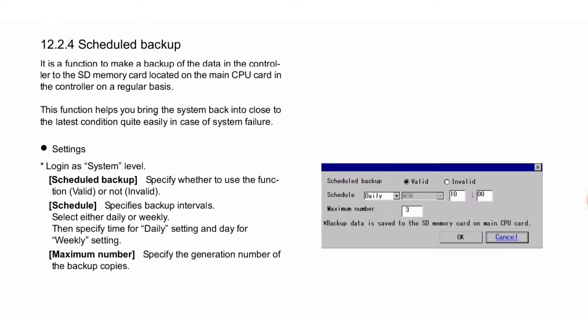Settings: log in as system level. Scheduled backup — specify whether to use the function: valid or invalid. Schedule specifies backup intervals — select either daily or weekly, then specify time for daily setting and day for weekly setting. Maximum number specifies the generation number of the backup copies. The scheduled backup procedure you can see in this image.